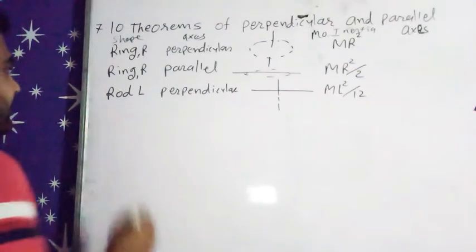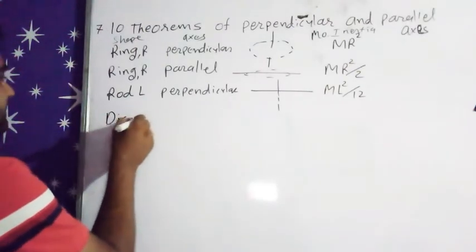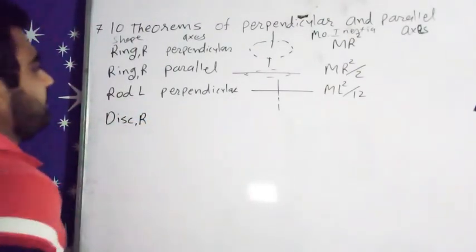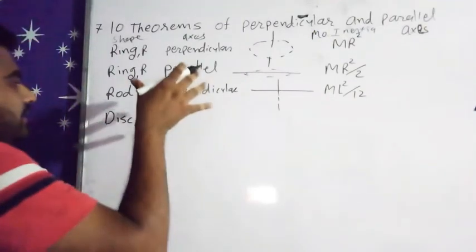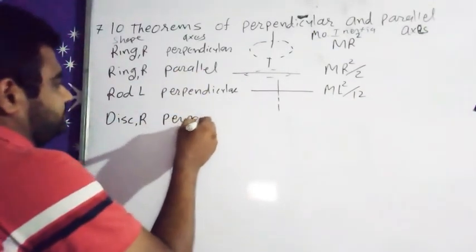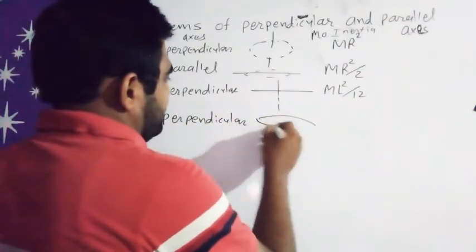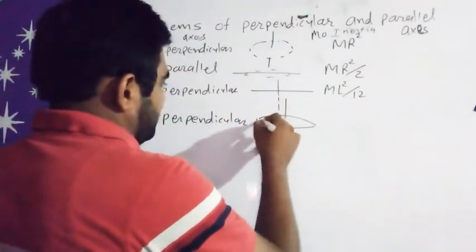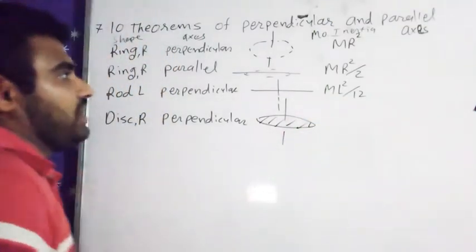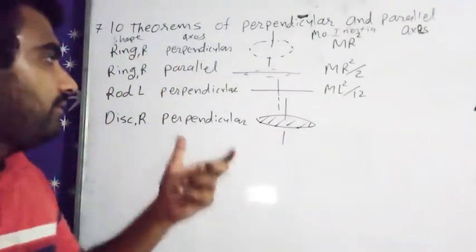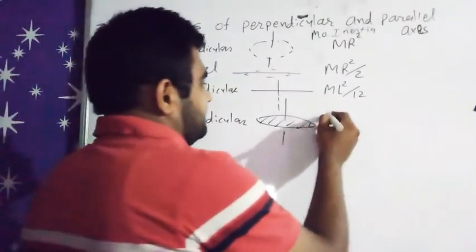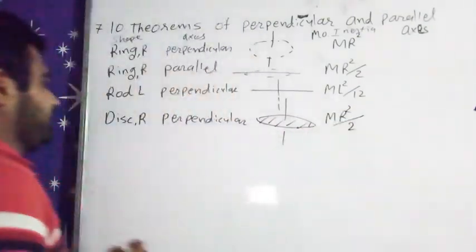Now third is disc. Disc has radius R. Now again axis is perpendicular. So this is our disc and perpendicular. So disc has moment of inertia MR square by 2.